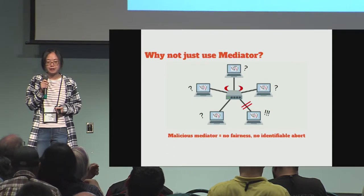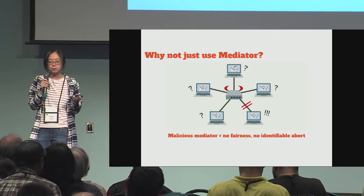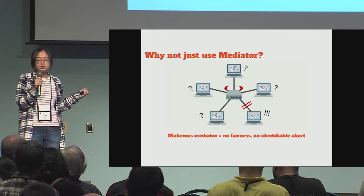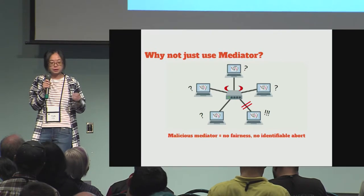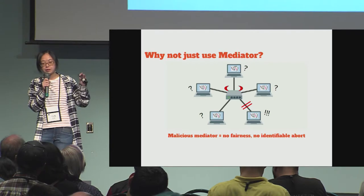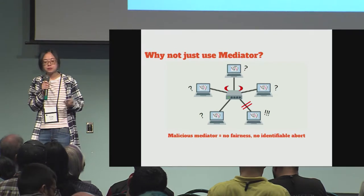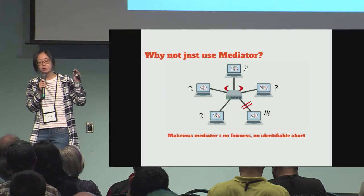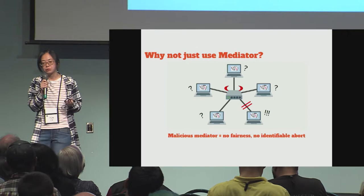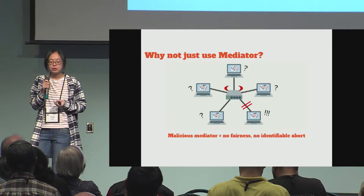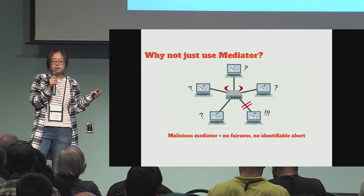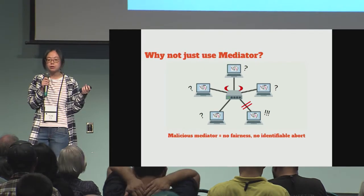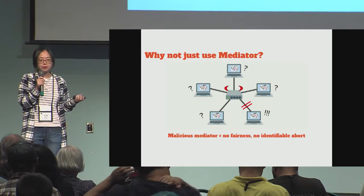The mediator seems nice because we allow abort, but why don't we use it? The reason is that a potentially malicious mediator can cut off communication between itself and some player in the game, and this is indistinguishable from that player being malicious and just not sending any messages. Basically, a malicious mediator means there is no fairness and no identifiable abort, which is bad for games.